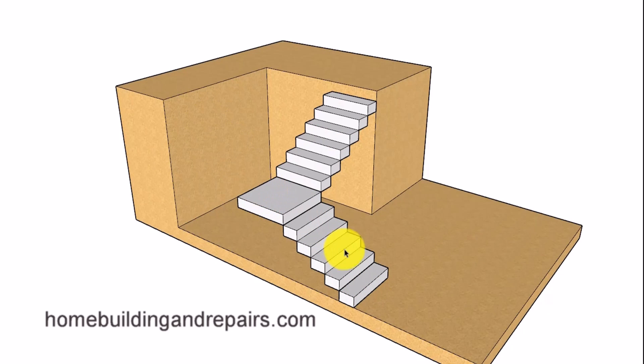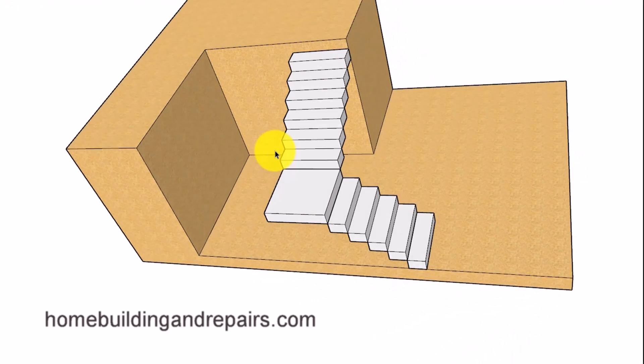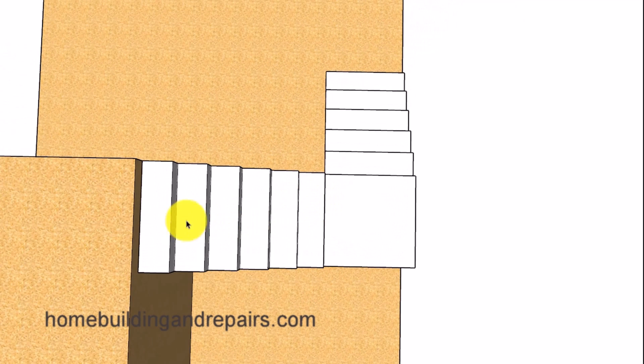Or instead of going straight up, I could have a stairway that goes off to the right or to the left. This is a common stairway, often referred to as an L-shaped stairway with a landing. And this stairway can also have a landing located anywhere within the stairway, one or two, three steps away from the top.